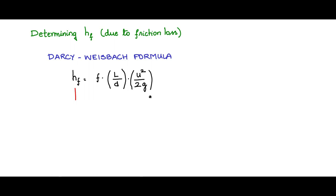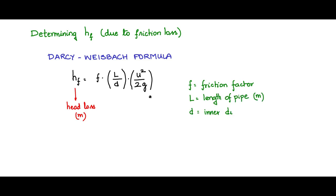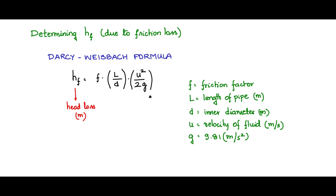Let us list the variables: HF is the head loss in meters; F is the friction factor, a dimensionless quantity; L is pipe length in meters; D is inner diameter in meters; U is velocity in m/s; g is acceleration due to gravity in m/s². Among all these parameters, g, U, D, and L are easily measurable. F, the friction factor, is something which is not so easy to obtain.